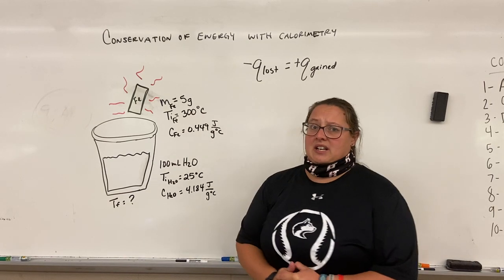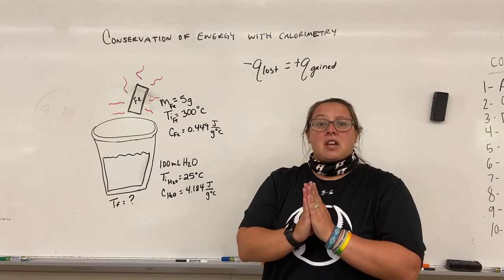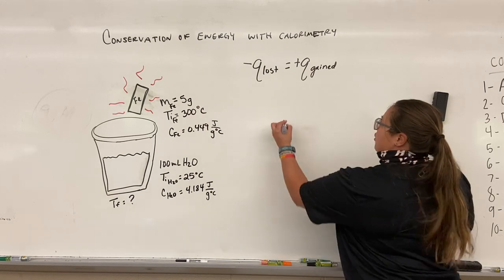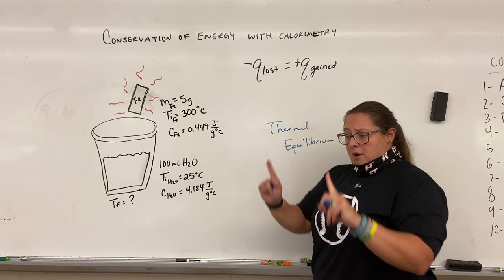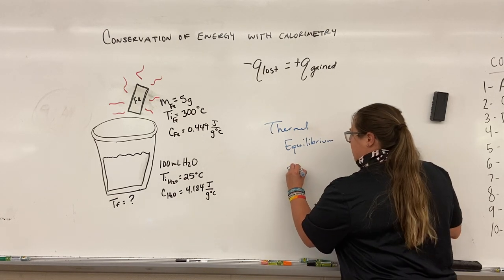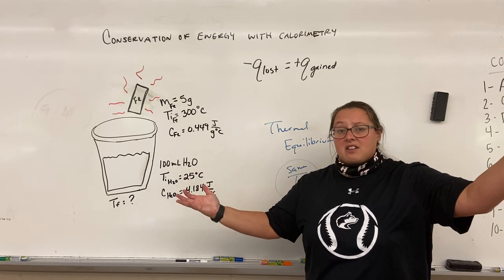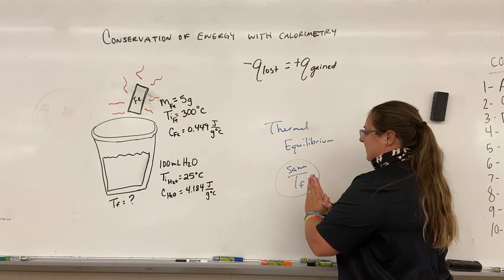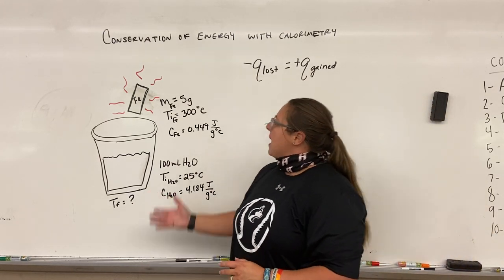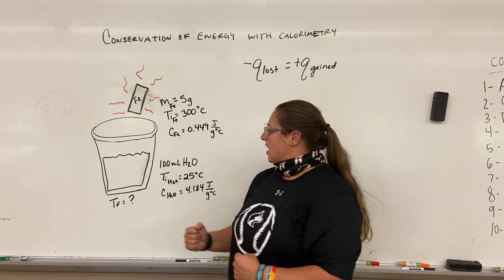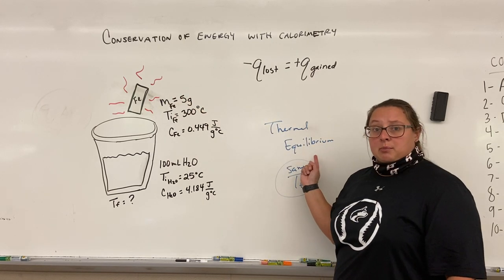Before we dive in, there's one conceptual thing we have to talk about. Whenever I take two substances at different temperatures and put them together, they are going to arrive at something called thermal equilibrium. Thermal equilibrium is when two different substances are put together and they arrive at the same final temperature. It doesn't matter what temperature the two substances started at — they will eventually reach the same temperature, and that is thermal equilibrium.